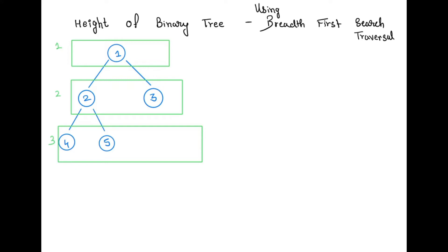I now have to track the height of the tree while doing the breadth-first search, and by the end return the height. To do that, I will define a counter variable called node count. Its function is: whenever we are traversing along the breadth of a level, when we enter a new level, I initialize node count as the number of nodes in that level. While traversing through nodes, I will be decreasing it.